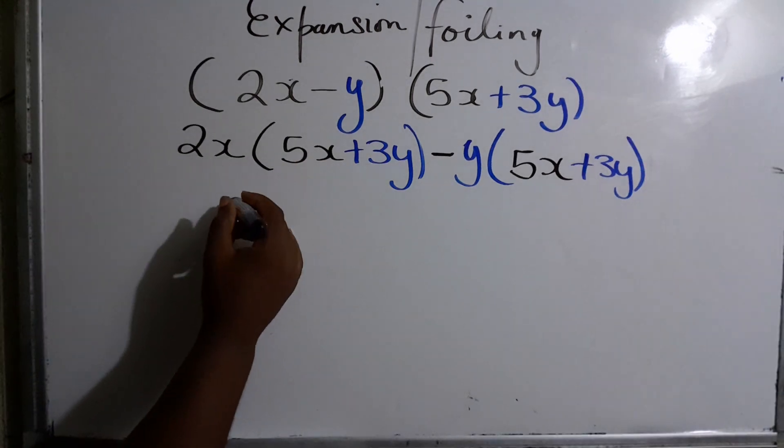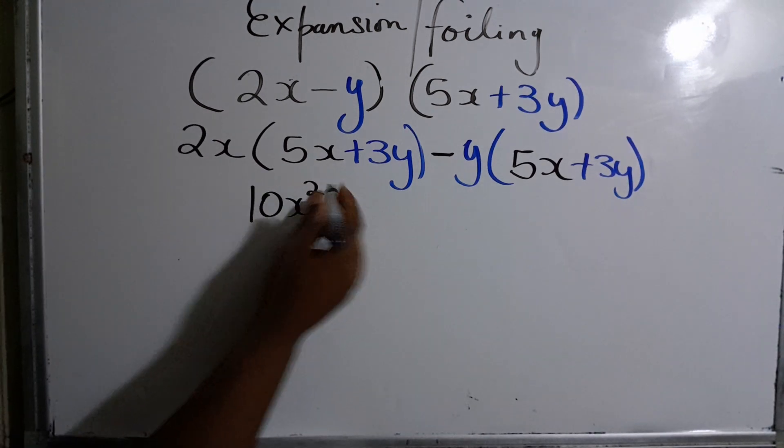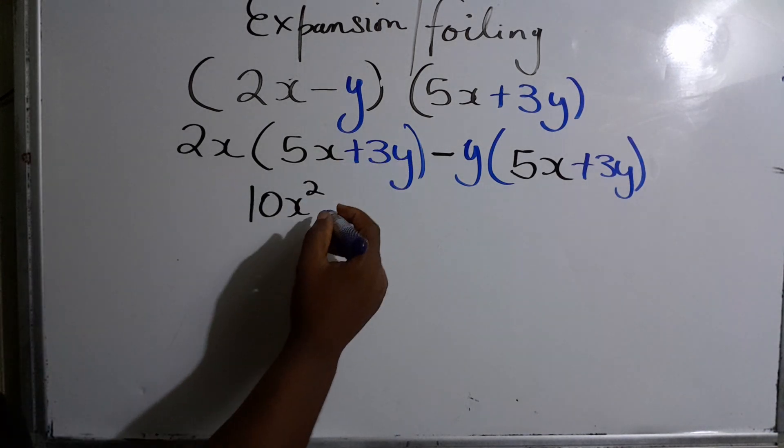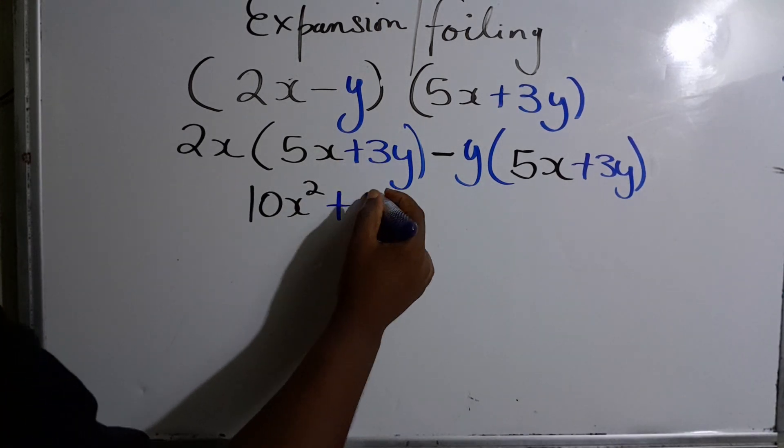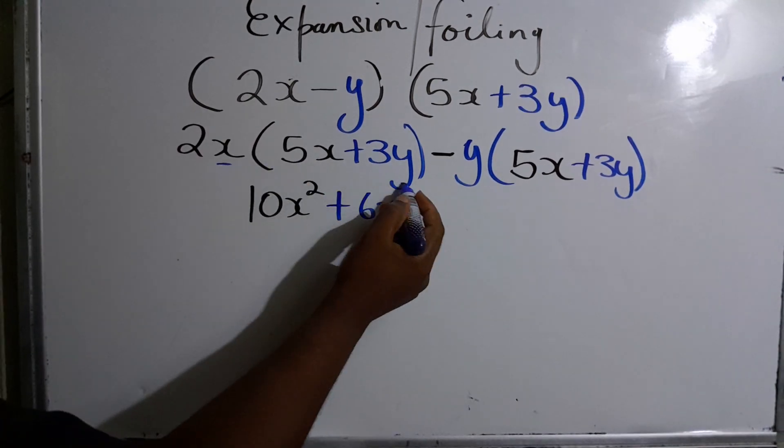So it will be 2x times 5x which gives us 10x squared. Back with the 2x, 2x times 3y would give us plus 6xy, because you have the x here and you have the y.